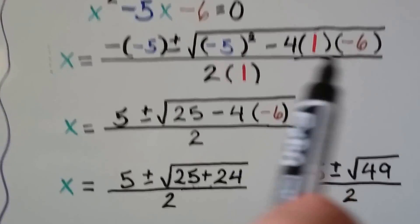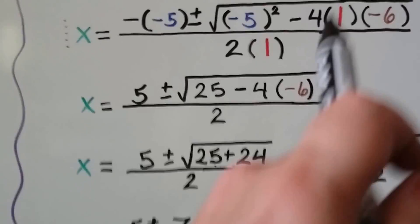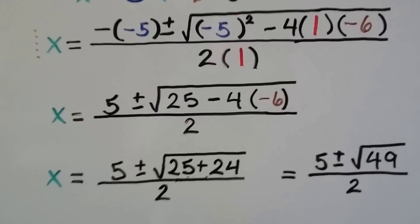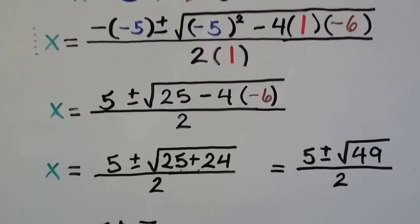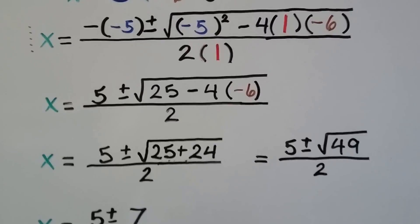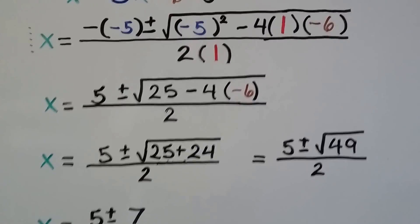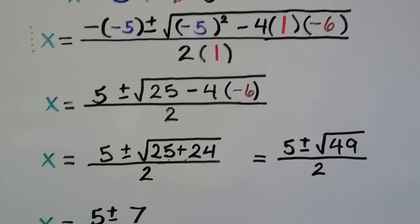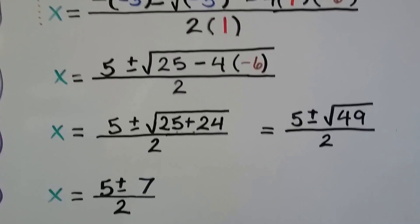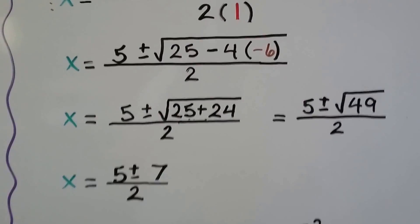We need to multiply and divide before we add or subtract. So we need to do this side of this minus sign first. We have -4 times 1, so that's -4, and it's times -6, which gives us a positive 24. -4 times -6 is positive 24.